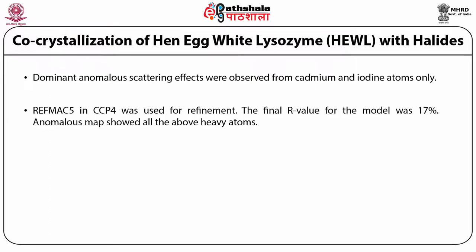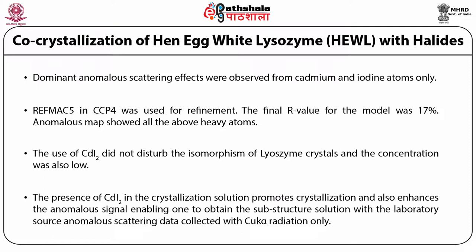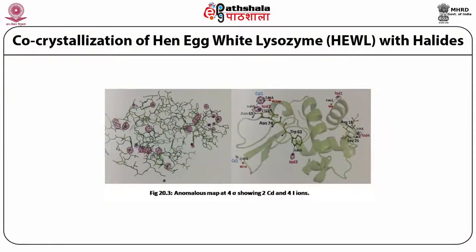Dominant anomalous scattering effects were absorbed from cadmium and iodine atoms only. REFMAC5 in CCP4 was used for refinement, and the final R-value of the model was 17%. An anomalous map showed all the above heavy atoms. The use of cadmium iodide did not disturb the isomorphism of lysozyme crystals, and the concentration was also low. The presence of cadmium iodide in the crystallization solution promotes crystallization and enhances the anomalous signal, enabling substructure solution with lab source anomalous scattering data collected with copper K-alpha radiation only. The anomalous map at 4 sigma shows the 2 cadmium and 4 iodine ions marked as Iodine 1, 2, 3, 4 and CD1 and CD2 in the right-hand side figure, with colored densities.